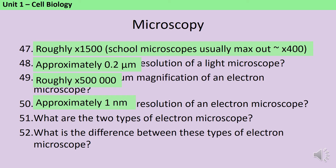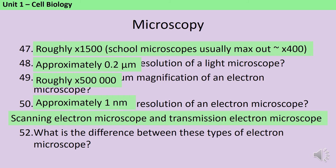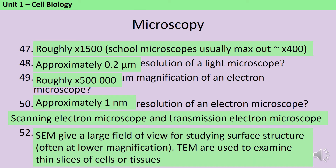The two types of electron microscope are a scanning electron microscope and a transmission electron microscope. Scanning electron microscopes give a larger field of view for studying surface structures, though often at a lower magnification, whereas transmission electron microscopes are used to examine thin slices of cells or tissues to look at the ultrastructure of subcellular structures.